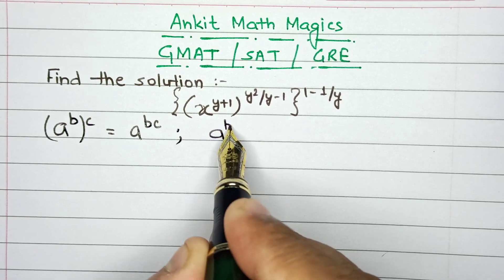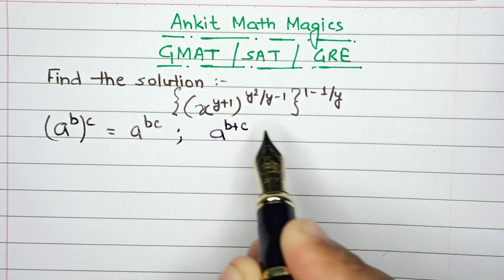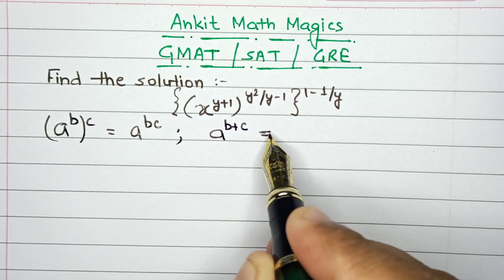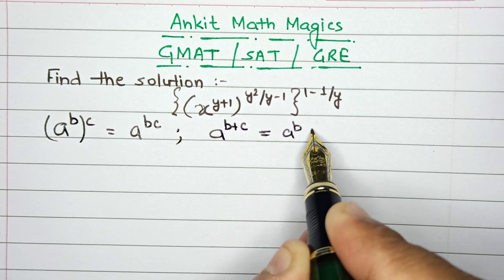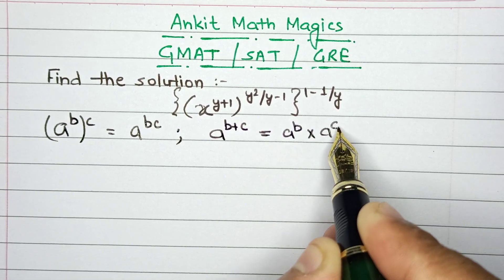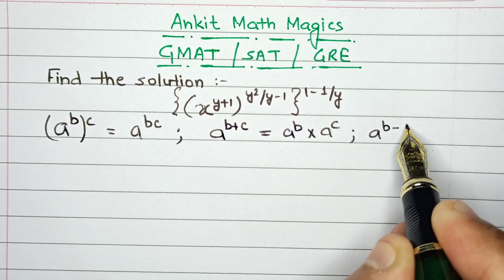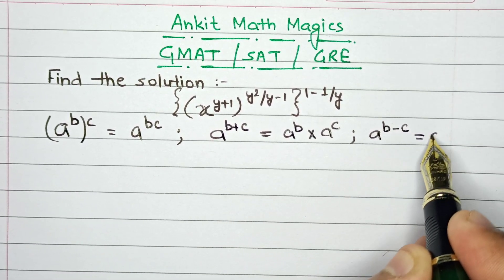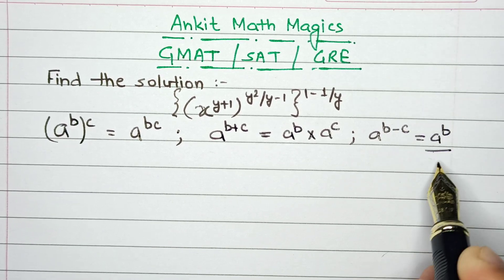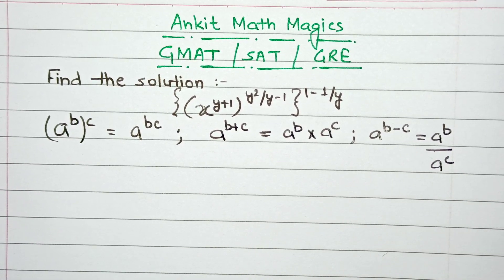The second property we might use: if a^(b+c) is given, this can be written as a^b multiplied by a^c. Similarly, a^(b-c) can be written as a^b divided by a^c.